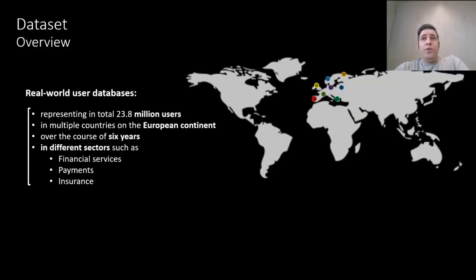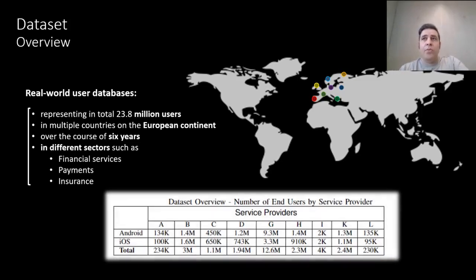Together with our industry partner, we collected a real-world large-scale risk dataset. The dataset represents in total 23.8 million users of security-critical mobile applications since Android 4 and iOS 6, provided by nine different service providers. Data was collected over the course of six years in different sectors like financial services, payments, and insurance in multiple countries on the European continent.